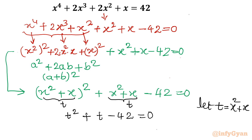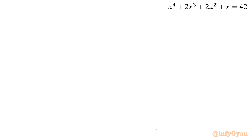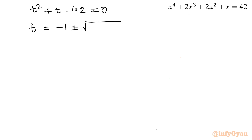So this equation converts into t² + t − 42 = 0. This is a quadratic equation where t = x² + x. Let us solve using the quadratic formula: t² + t − 42 = 0, where a = 1, b = 1, c = −42. t = −b plus or minus square root of b² − 4ac, divided by 2a — so divided by 2.